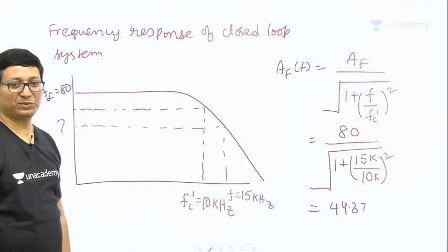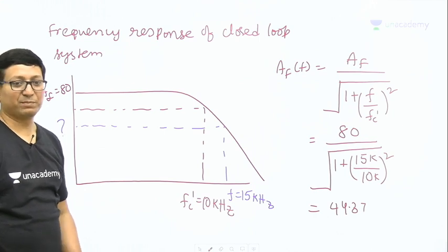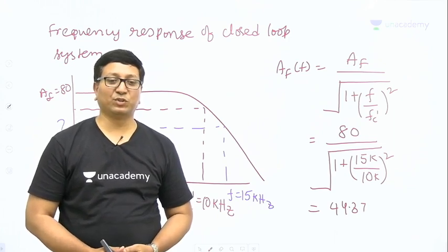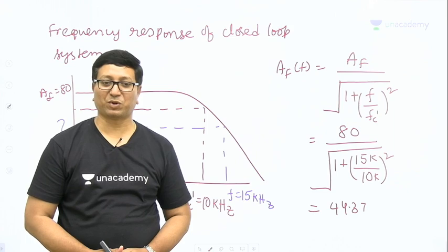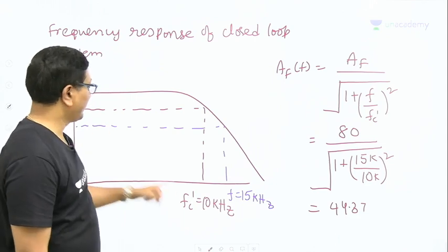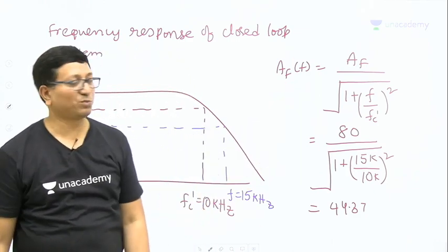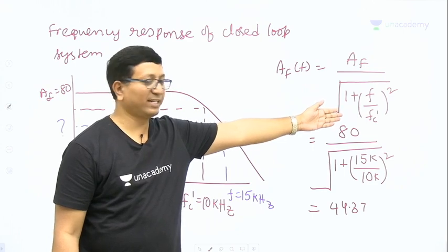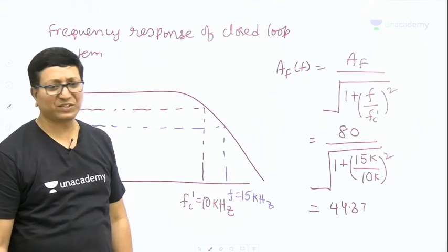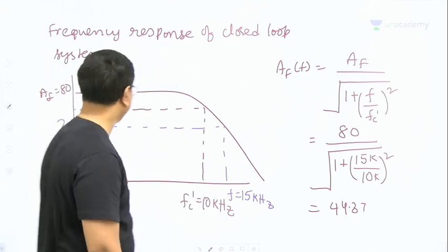This is how we can do this problem. I did this problem in two methods simultaneously. You can adopt any one you wish. You can make use of the concept of feedback, or you can use the op-amp closed-loop gain with virtual short and gain-bandwidth product. Anything you can use to find the values of AF and fc'. Once you get AF and fc', the closed-loop system's frequency response is a low-pass filter. The gain equation is given by this, in which if you substitute f = 15 kHz, you can see the answer is around 44.37.